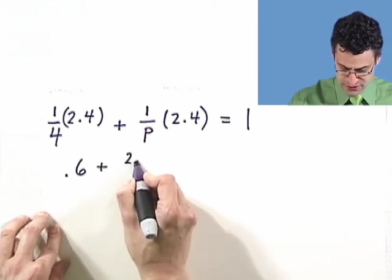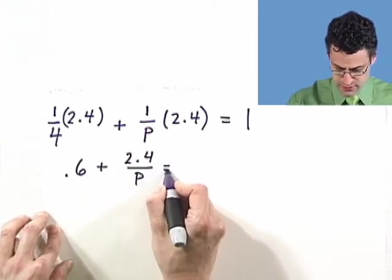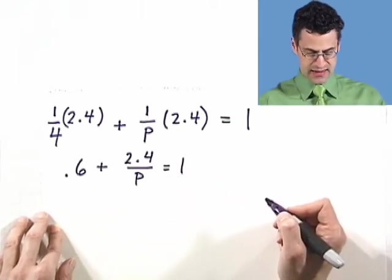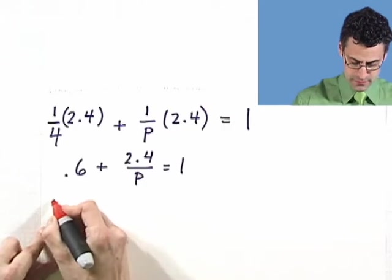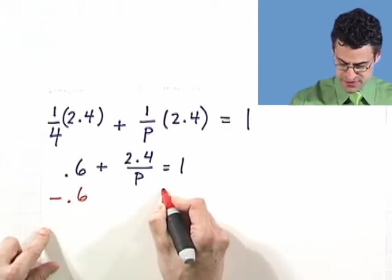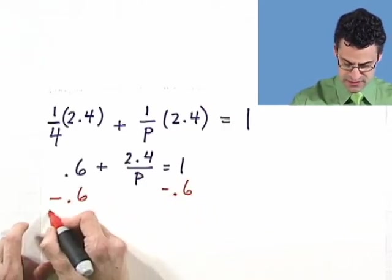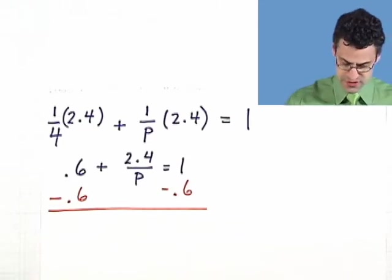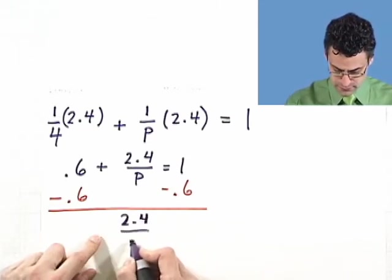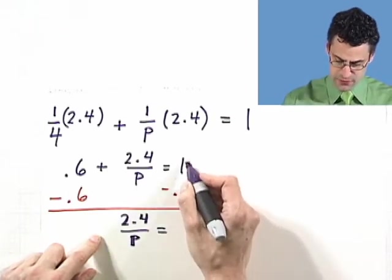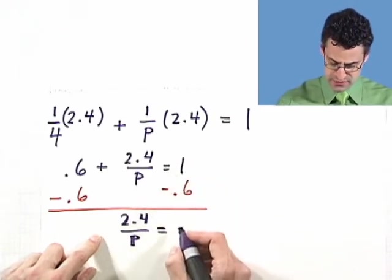And then I have 2.4 over P equals 1. And I can now subtract 0.6 from both sides, keeping everything balanced, a well-balanced equation. And if we have 1 and take away 0.6, then we're left with 0.4.